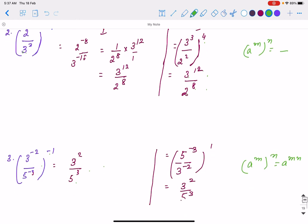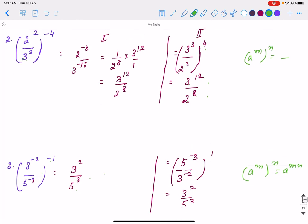So one more question, second question. Here it is 2 square by 3 cube, power is minus 4. So if we solve here, multiply the power: it is 2 to the power minus 8, 3 to the power minus 12.